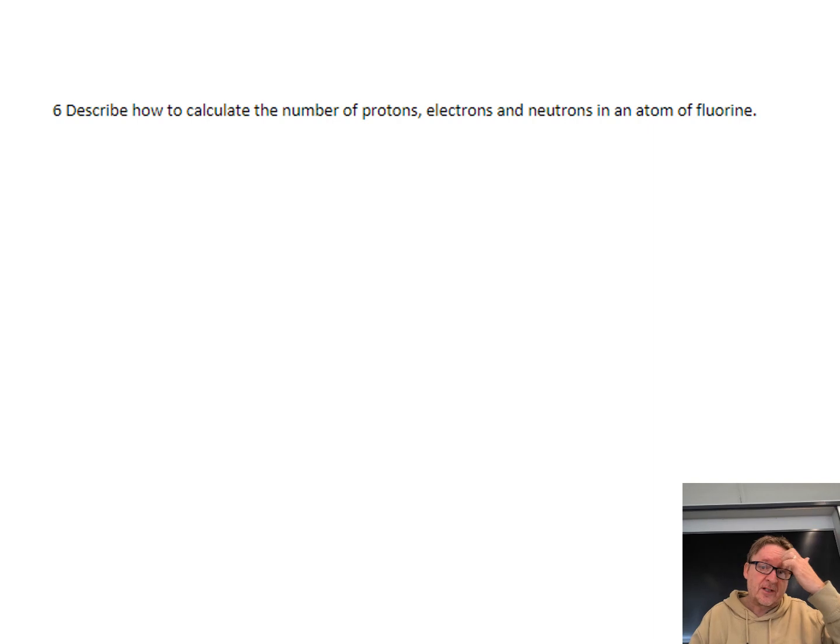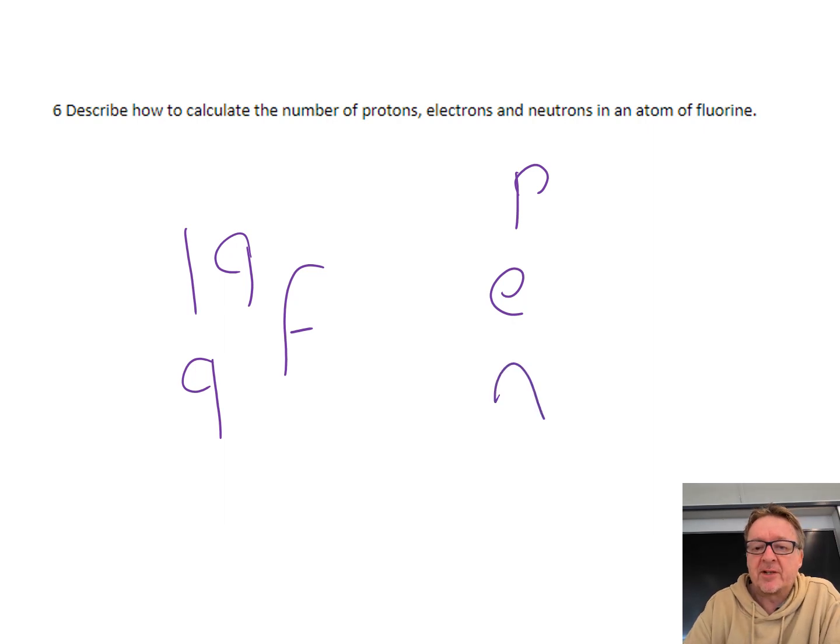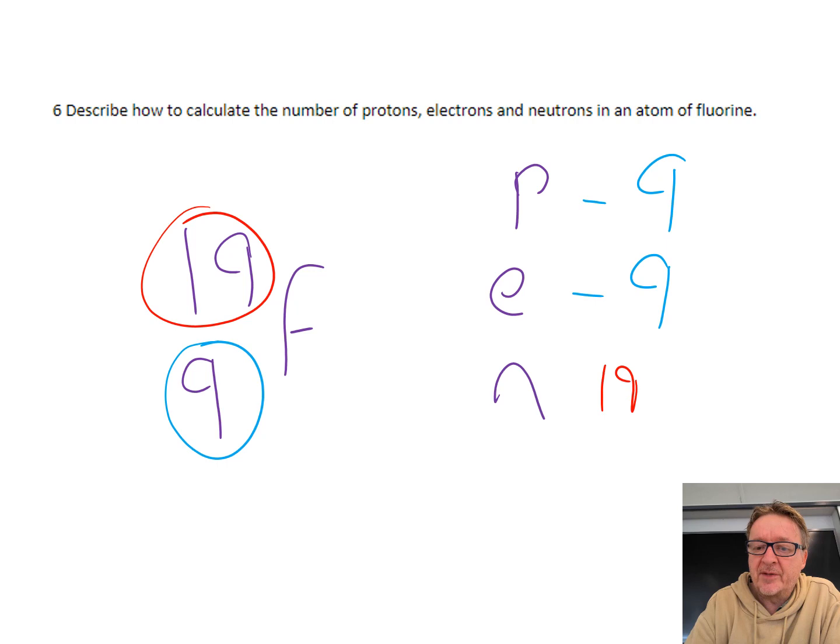Describe how to calculate the number of protons, electrons, and neutrons in an atom of fluorine. I look at the periodic table for fluorine: 19, 9, F. Protons is always the smaller number, 9. Electrons is always the same, 9. Neutrons is 19 minus the number of protons, which equals 10.